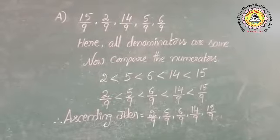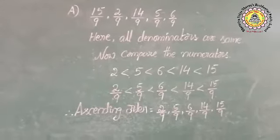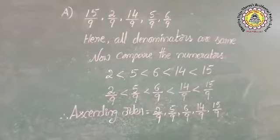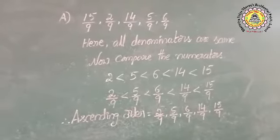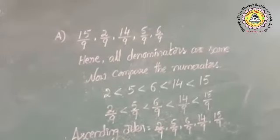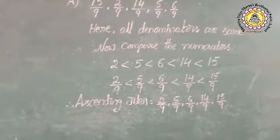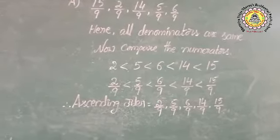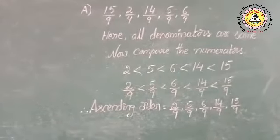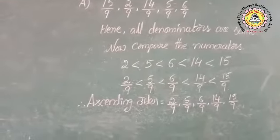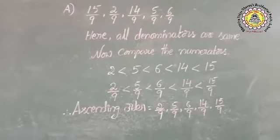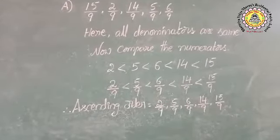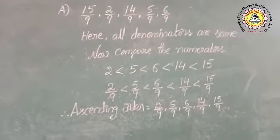Now, compare the numerators. Comparison means what is the smaller number and what is the bigger number. We have to compare the numerators. 2 is less than 5 is less than 6 is less than 14 is less than 15. If 2 is less than 5, then 2 by 9 is less than 5 by 9. If 6 is less than 14, then 6 by 9 is also less than 14 by 9. So, 2 by 9 is less than 5 by 9 is less than 6 by 9 is less than 14 by 9 is less than 15 by 9. Therefore, our ascending order is: 2 by 9, 5 by 9, 6 by 9, 14 by 9, and 15 by 9.